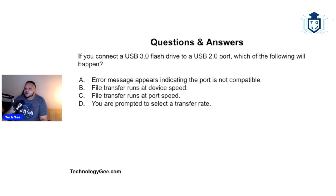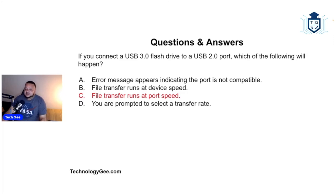Next question: if you connect a USB 3.0 flash drive to a USB 2.0 port, which of the following will happen? Will an error message appear indicating the port is not compatible? Will file transfers run at the device speed? Will file transfers run at the port speed? Or will you be prompted to select a transfer rate? The answer is: file transfers will run at the port speed. Just because you have a flash drive that supports faster transfer speeds, if you plug it into a slower port, the files will transfer at the speed of that slower port.